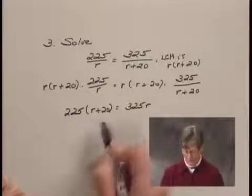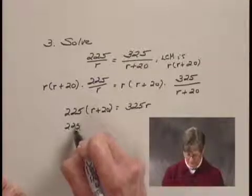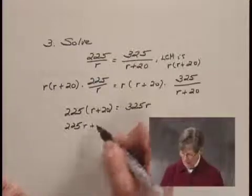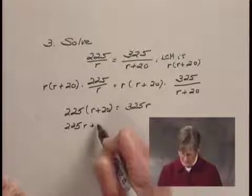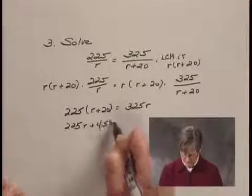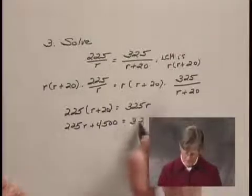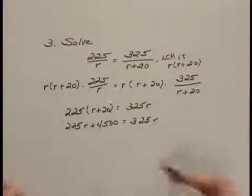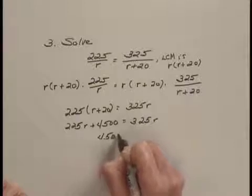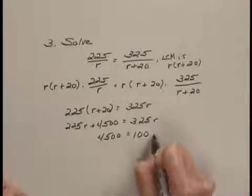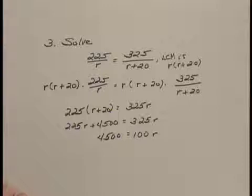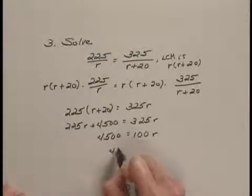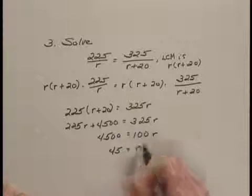I'll remove the parentheses here. We have 225 R plus 4500 equals 325 R. I'll subtract 225 R on both sides and we have 4500 equals 100 R. And then dividing both sides by 100, we have 45 equals R.